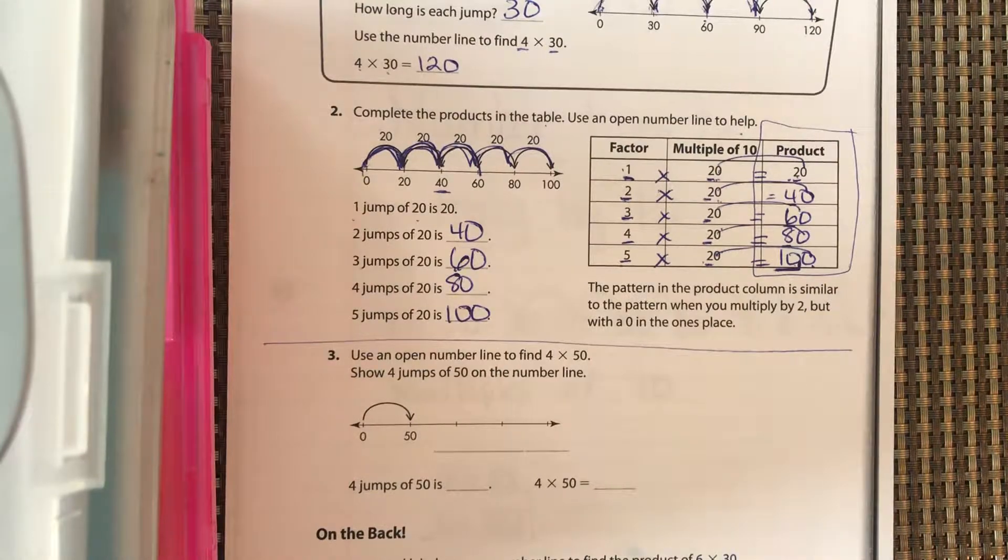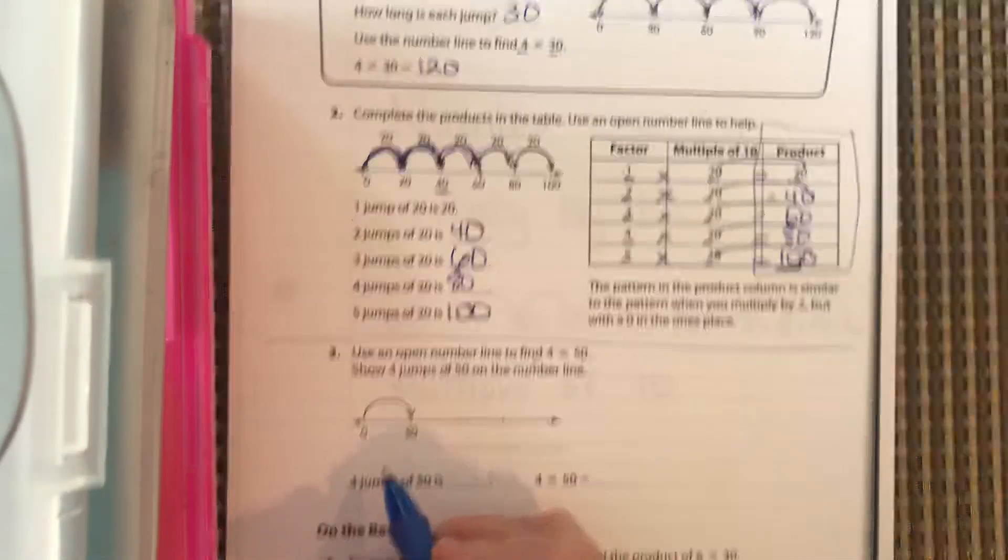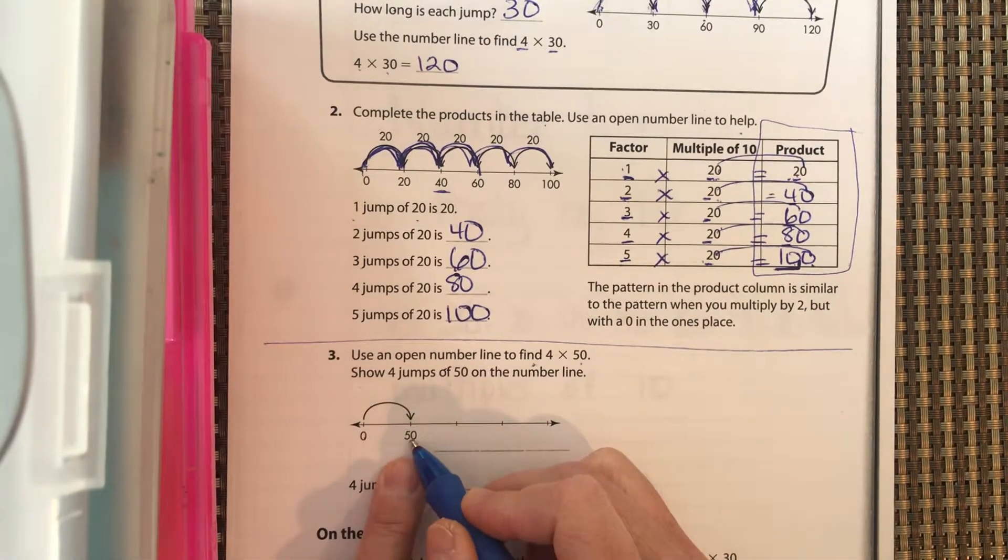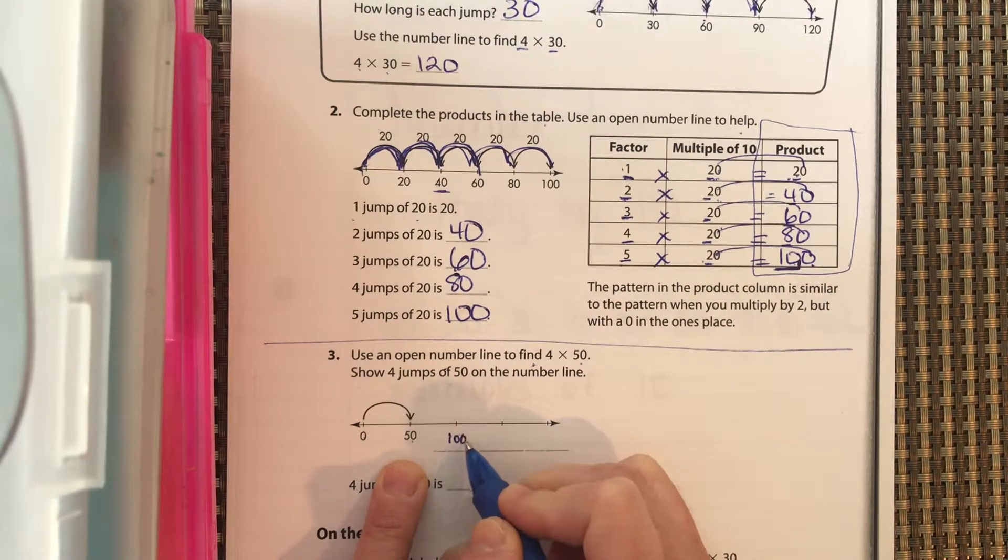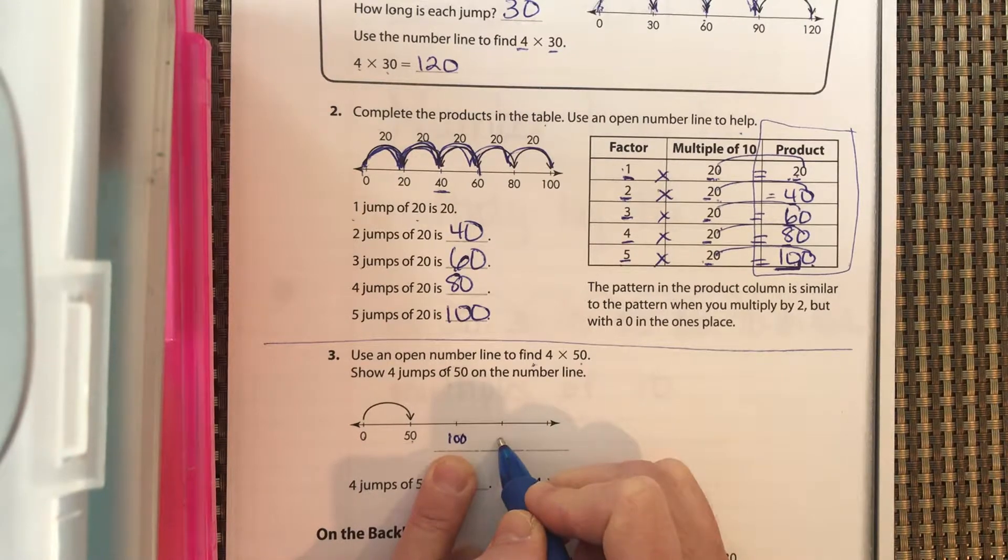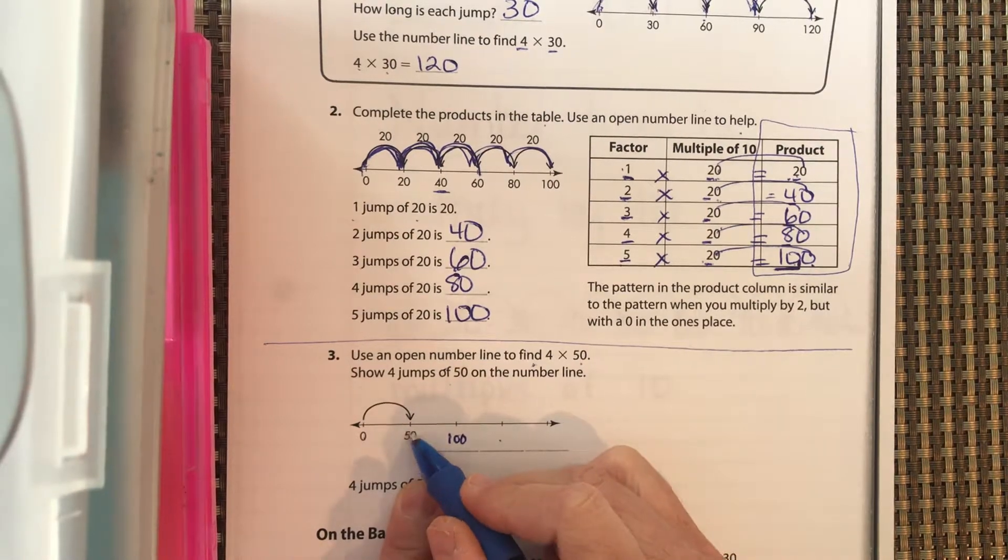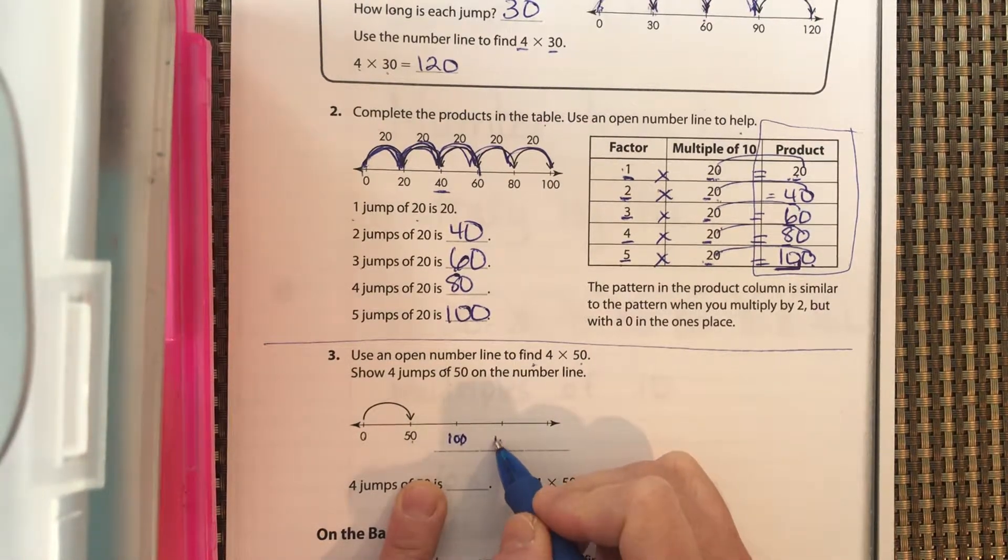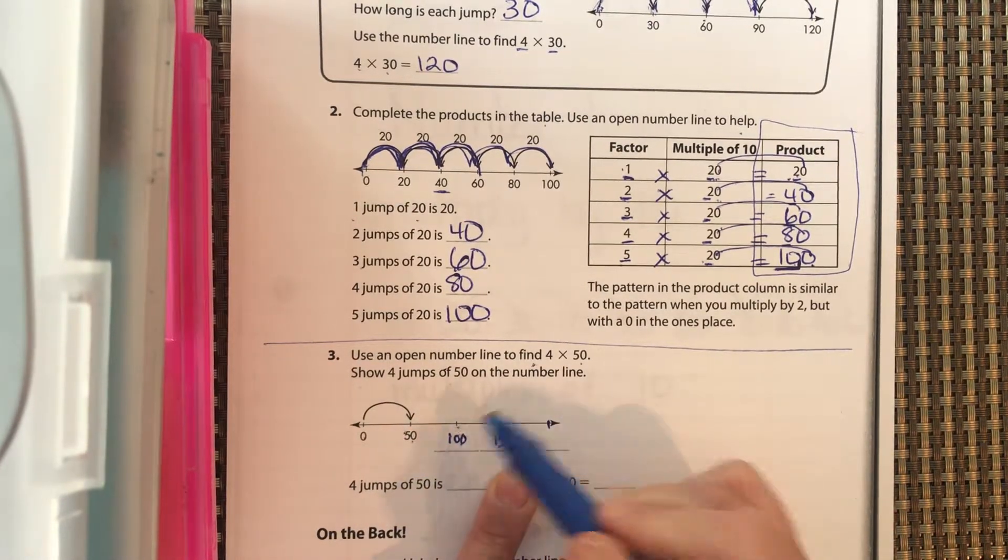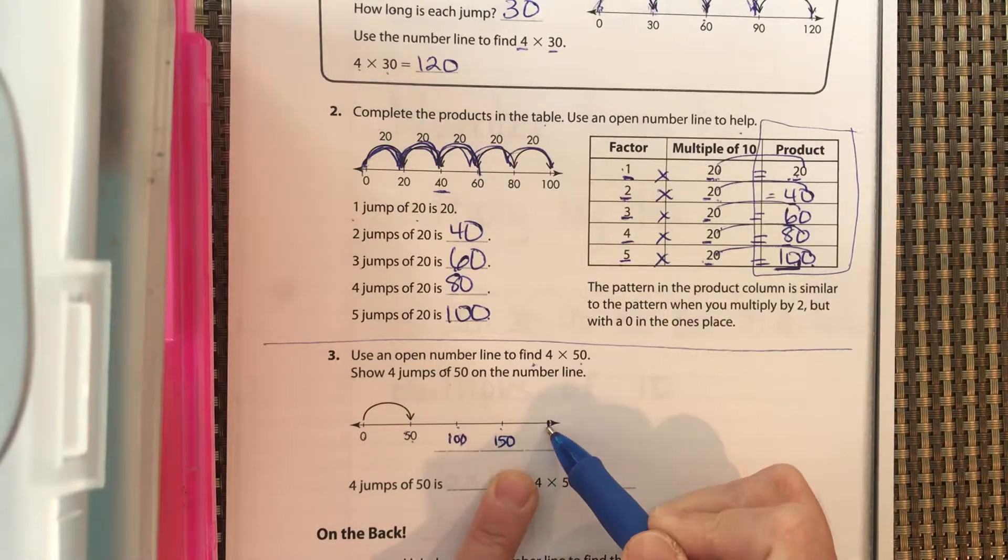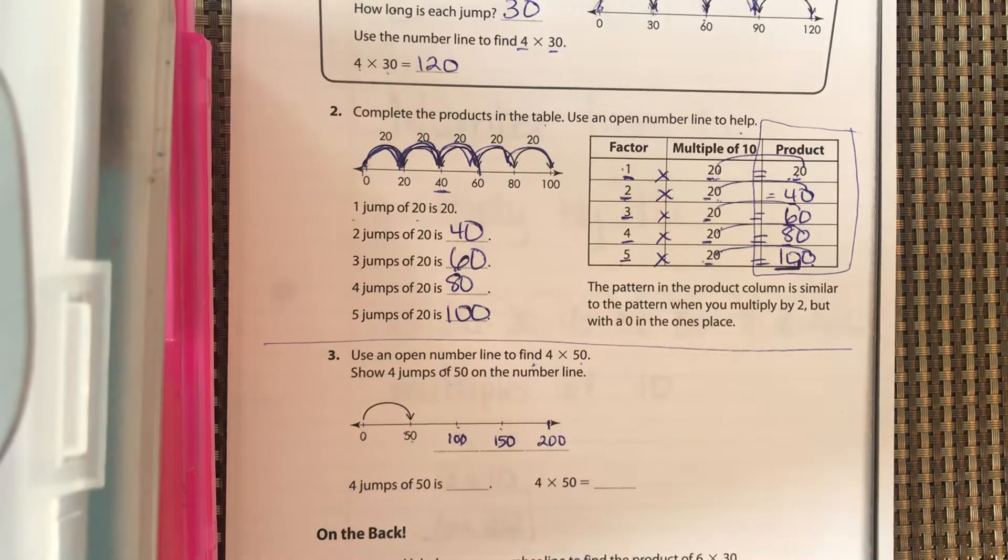Okay, so use an open number line to find 4 groups of 50. Show 4 jumps of 50 on the number line. So what are we going to label these? If this is 50, we're going to count by 50, so what should this be? 100. What should this one be? 50, 100, 150. And then how about this little guy right here? We've got 50, 100, 150. We're counting by 50, so what should this one be? 200.